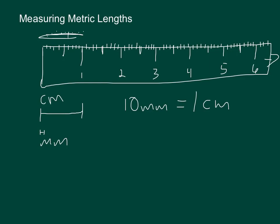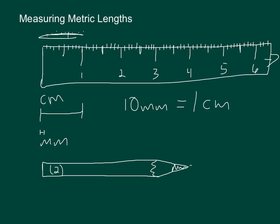So when we're measuring things as far as metric lengths, you'll have an object. Let's say we have a pencil. We start the pencil at the beginning of the ruler, and then we measure it up and it goes to two little lines past the four. So we want to say how long is that pencil in terms of centimeters and millimeters — you would say it's four centimeters and two millimeters.